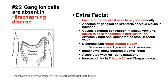Number 25: Ganglion cells are absent in Hirschsprung disease. Hirschsprung disease is a failure of neural crest cells to migrate caudally in the intestine, leading to an absence of ganglion cells in the enteric nervous plexus, causing a constant contraction in that area. Typically, you'll have newborns presenting with bilious vomiting and failure to pass meconium in the first 48 hours of life.